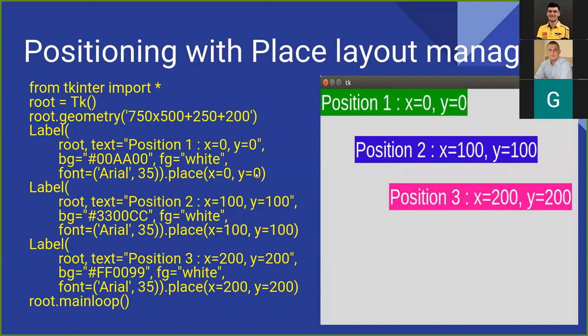Let's take a look at this example of positioning with the place method. We create a window as in the previous example and create three labels, but we put them on the form using the place method. As you can see, it receives two parameters — x and y — which are absolute coordinates showing where the top-left point will be located on the parent widget. The first label is in the top-left corner of the form, the second is at coordinates 100 left and 100 top from the corner, and the last one is at coordinates 200 left and 200 top from the corner. I use this method in my application.